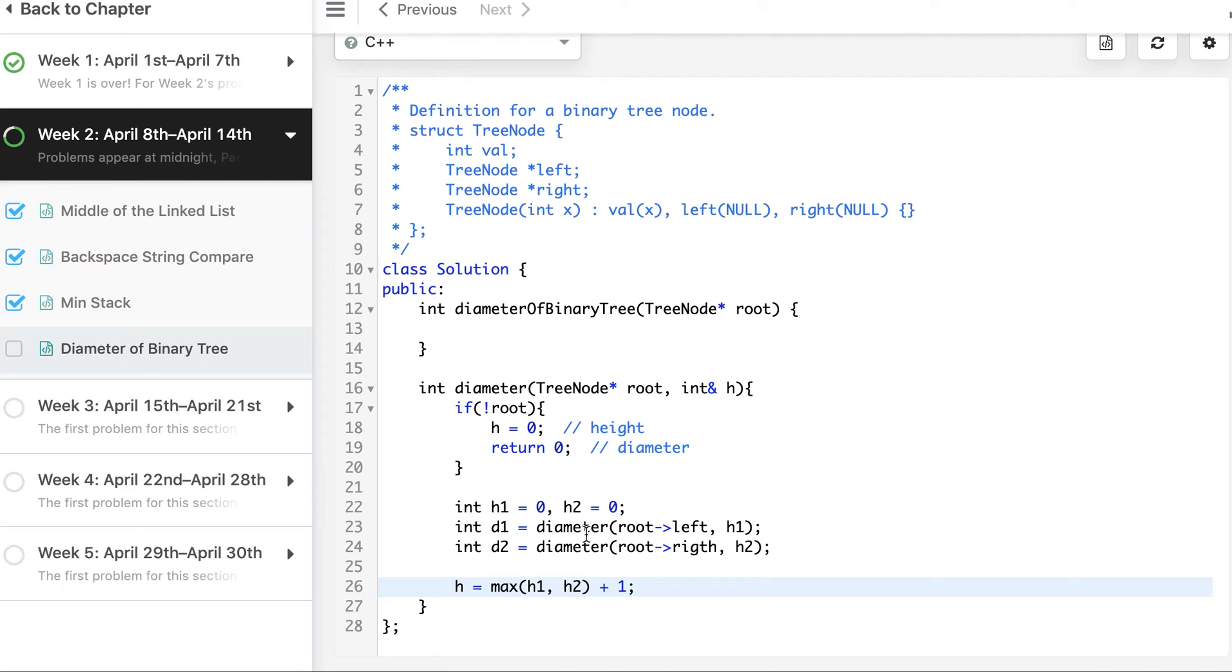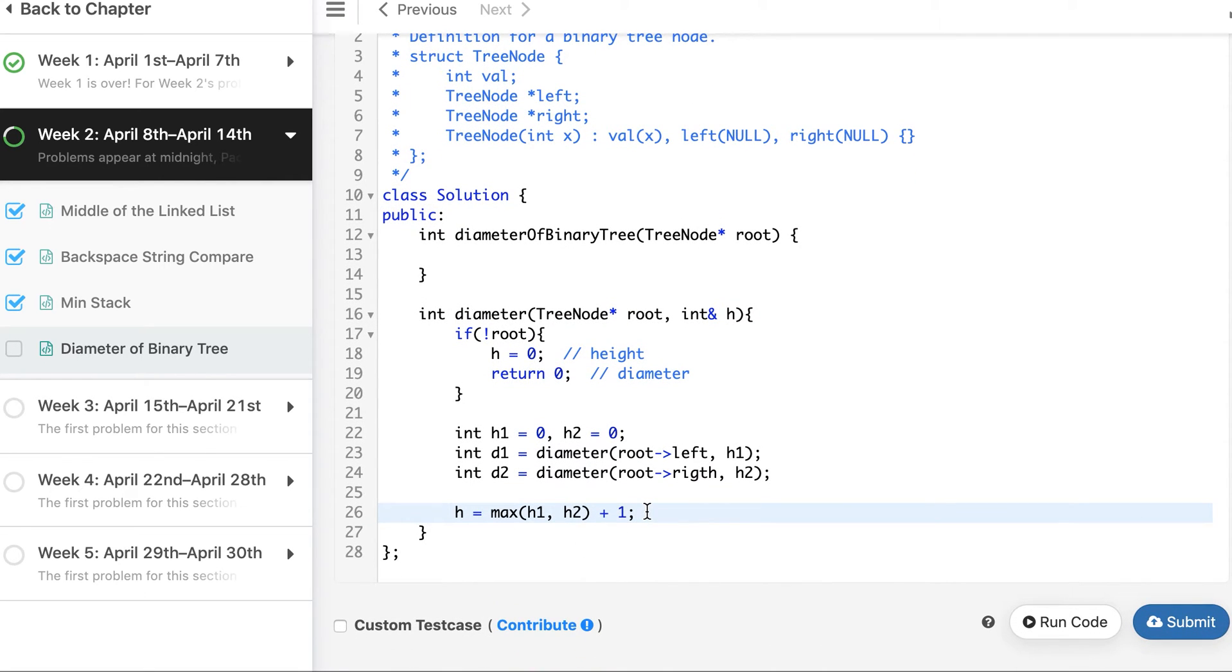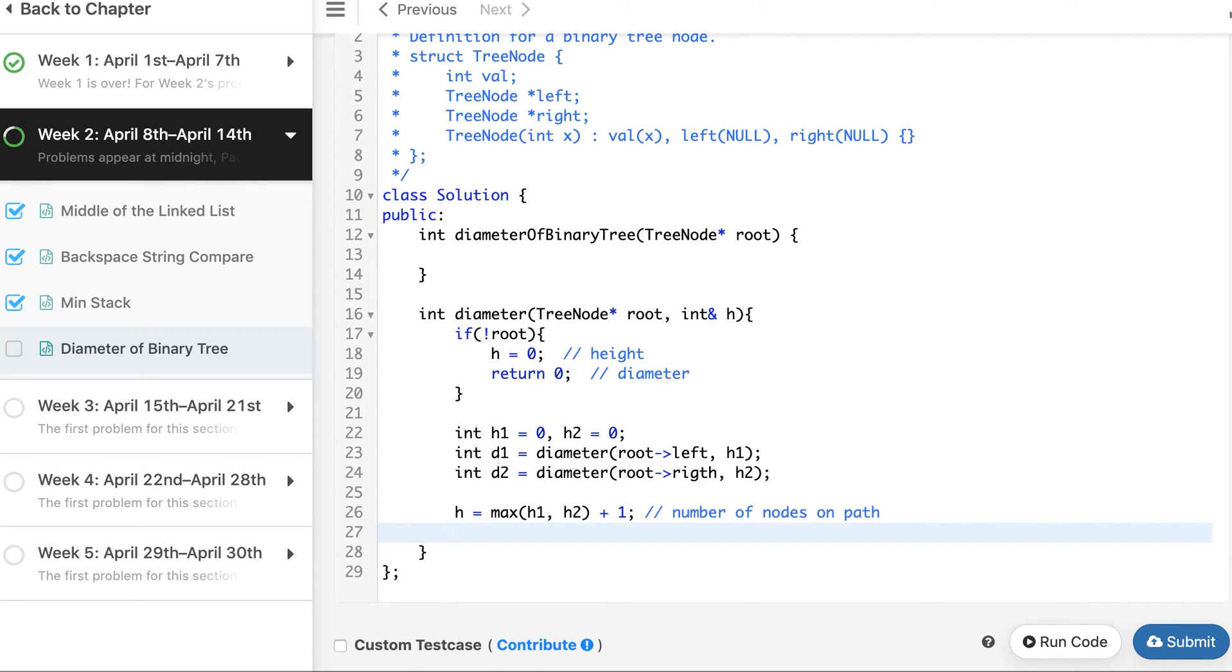Which will be max of h1, h2 plus 1. So here you will see that we are kind of keeping track of the number of nodes. If we reach a leaf node, we will call it for its left which will be null, so it will return 0. Its right will also be null, so it will also return 0. We will take the maximum of these two and it will return 0, and then we add 1. So for leaf node it's 1. For 1 level up it's 2. So this height includes a number of nodes on paths. So height is in terms of number of nodes.